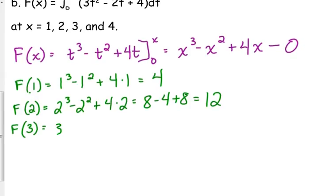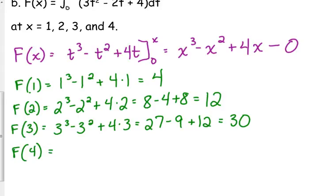F of 3: 3 cubed minus 3 squared plus 4 times 3. 27 minus 9 is 18. 18 plus 12 is 30. And finally F of 4: 4 cubed minus 4 squared plus 4 times 4. 64 minus 16 plus 16 is 64.